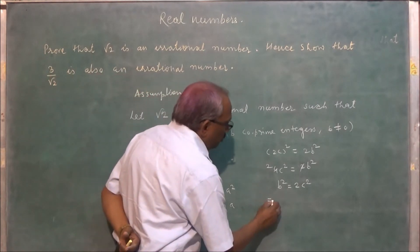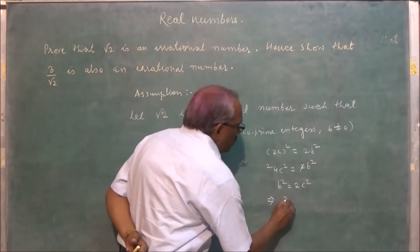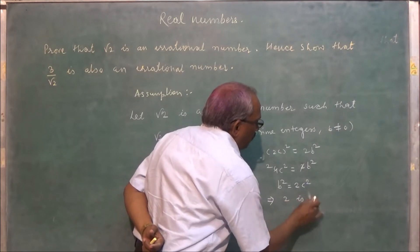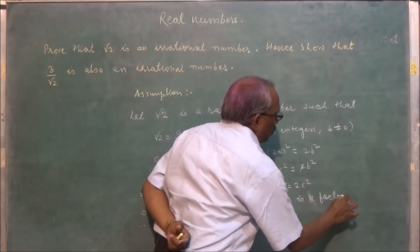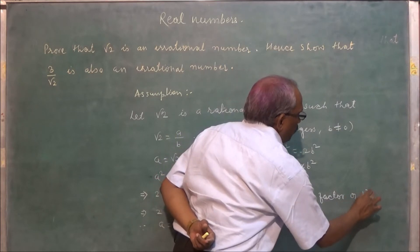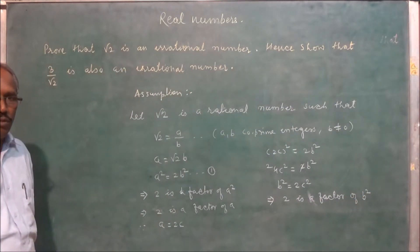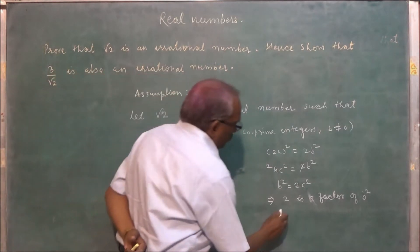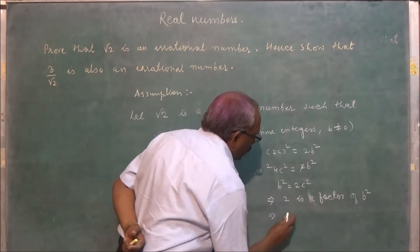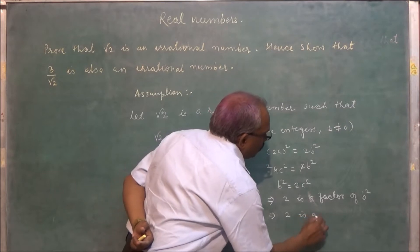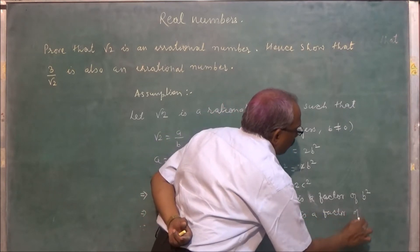This implies 2b squared, so 2 is a factor of b squared. This implies 2 is a factor of b.